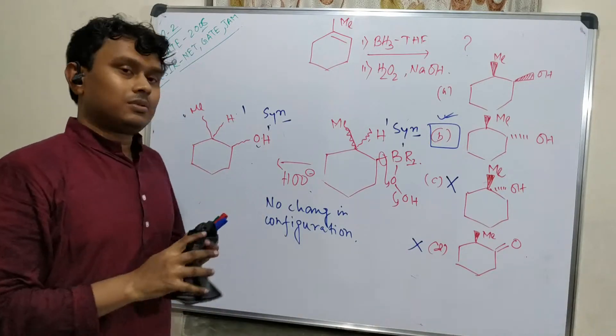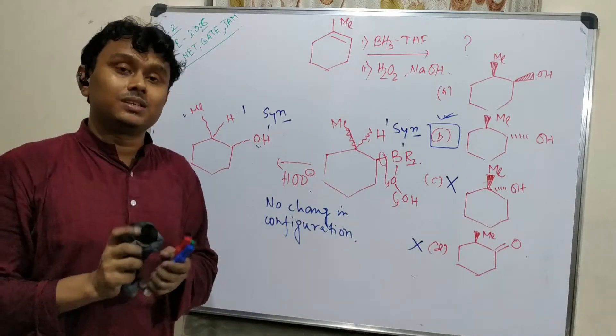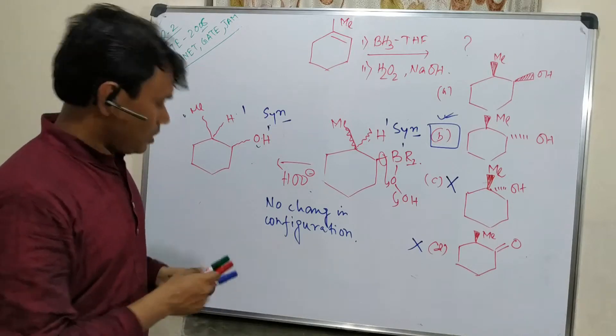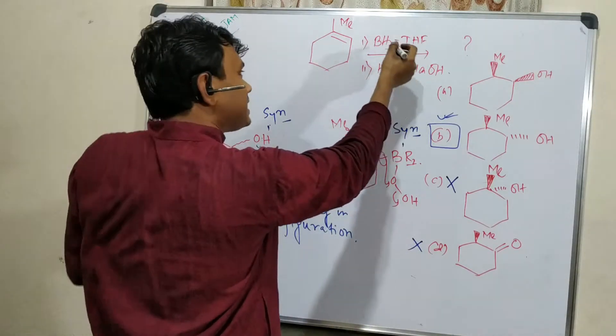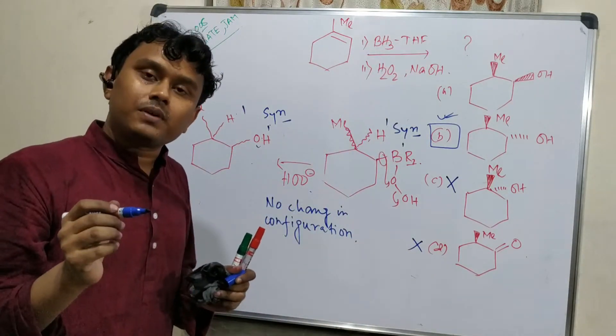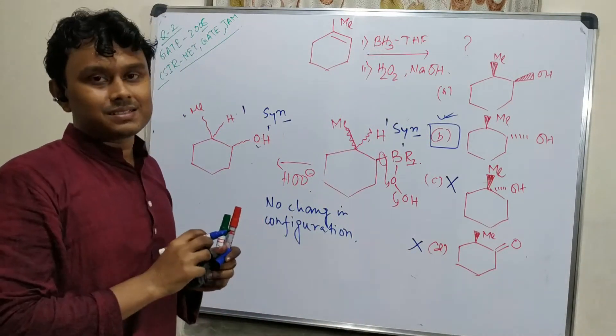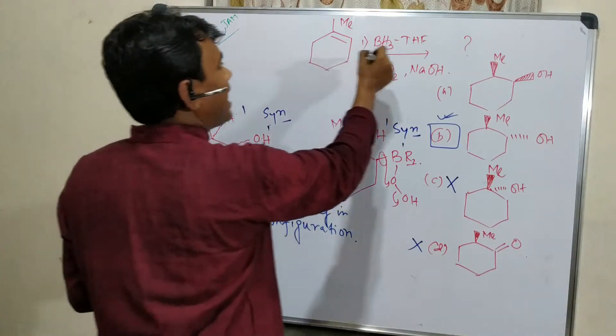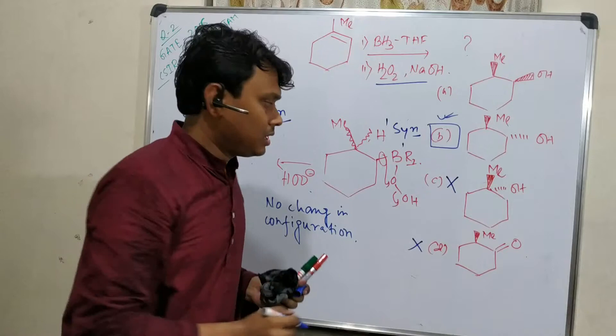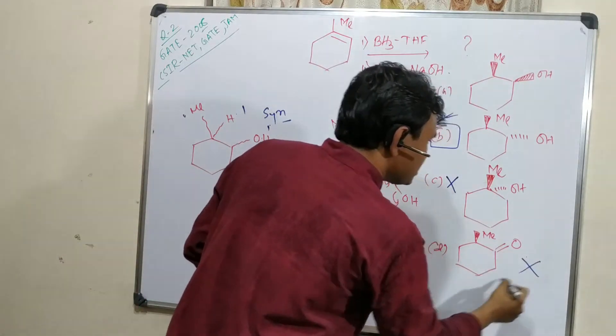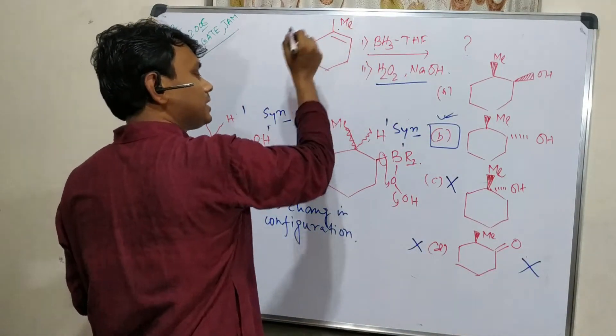Now I will tell you the trick to solve this question within 30 seconds. For example, you can see that in this example, we know boron prefers to attach to the less hindered side. And another thing, hydroboration oxidation with hydrogen peroxide produces alcohol.